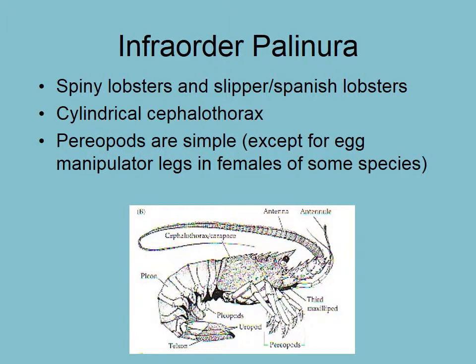The order Palinura contains your typical spiny lobsters — not crayfish with large chelate first appendages, but spiny lobsters with long first antennae. They are in the decapod family.